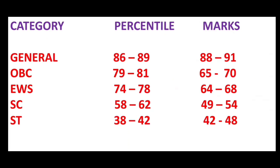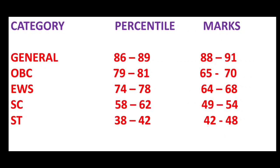An SC category student needs to secure a percentile between 58 and 62, and a marks range between 49 and 54. On the other side, an ST category student needs to get a percentile between 38 and 42, and a marks range between 42 and 48.